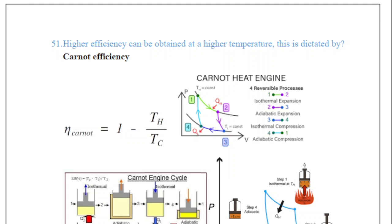Question 51 is asking about higher efficiency, which can be obtained at a higher temperature. This is dictated by the Carnot efficiency. The formula shows that efficiency equals 1 minus TH by TC, where H represents heat and C represents cool. Carnot efficiency is the maximum efficiency that a heat engine may have, operating between two temperatures: heat and cold.